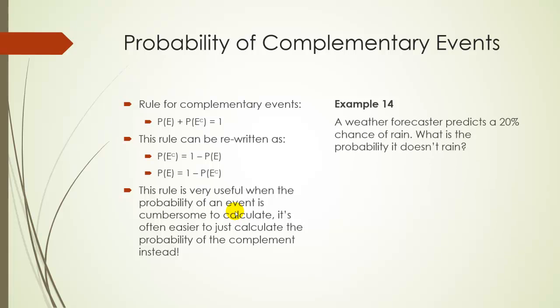For example, suppose a weather forecaster predicts a 20% chance of rain. What's the probability it doesn't rain? What's the complement?